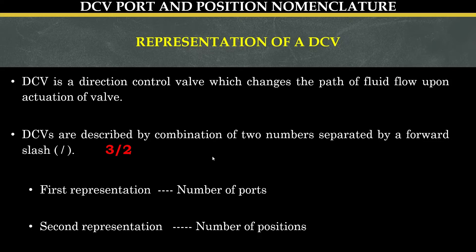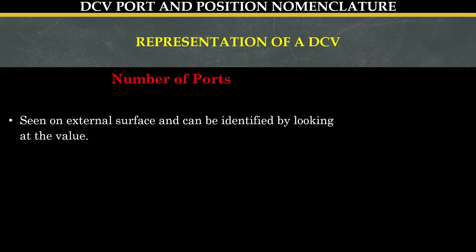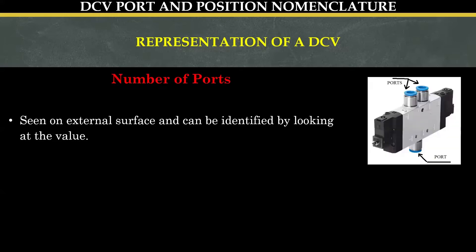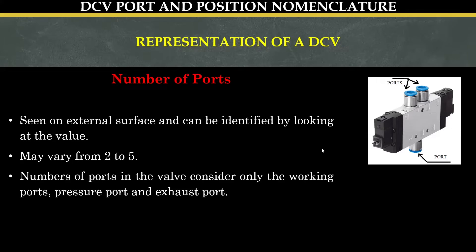Let us understand what is a port and what is a position. Number of ports are seen on the external surface of a direction control valve and can be identified by looking at the valve. The number of ports may vary from two to five. When the number of ports are considered for designation, only the working port, pressure port, and exhaust port are considered.